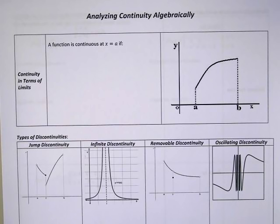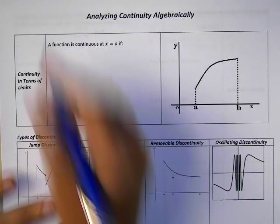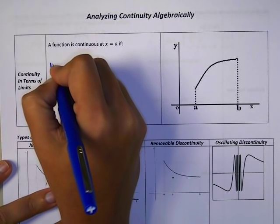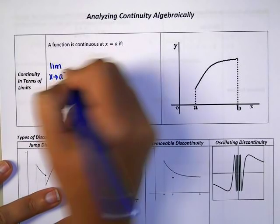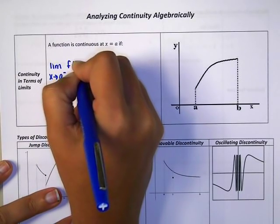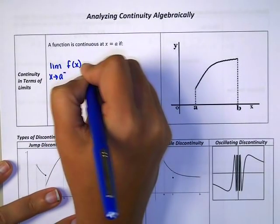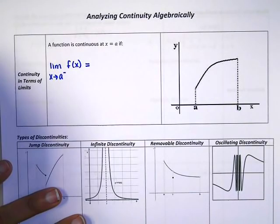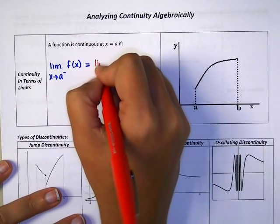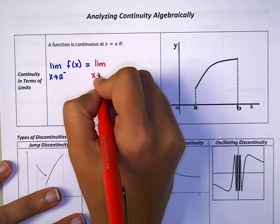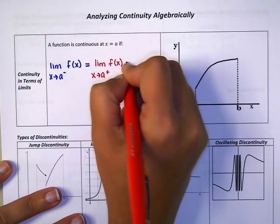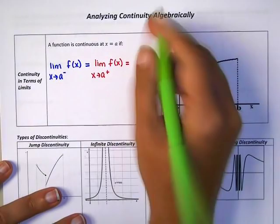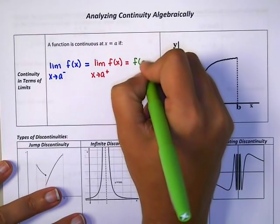A function is going to be continuous if the following three things match: the limit as X approaches your specific number from the left equals the limit as X approaches your specific number from the right, which has to equal your actual function Y value at that point.